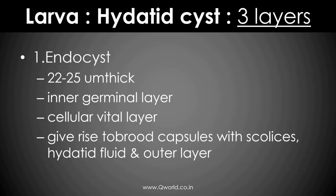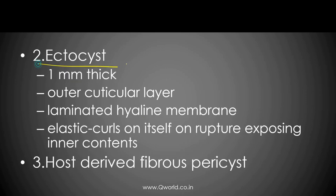The larval form is also known as the hydatid cyst. It has three layers. The innermost layer is known as endocyst — it is the germinal layer, the vital layer from which everything will come to life: brood capsules with future heads, scolices, hydatid fluid, as well as the outer layers. The outer layer is ectocyst, which is elastic in nature and provides protection. The third layer is basically the inflammatory reaction of the host, which gives a fibrous layer to the cyst.